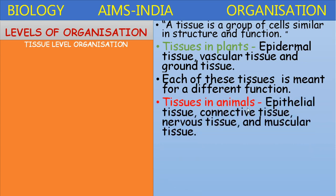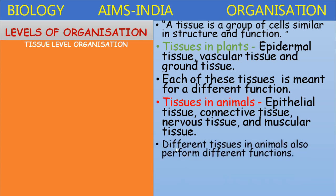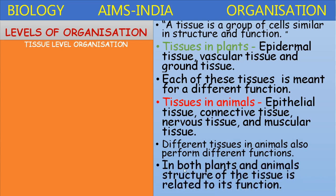Tissues in animals: there are four major types of tissues in animals — epithelial tissue, connective tissue, nervous tissue, and muscular tissue. The different tissues in animals also perform different functions.